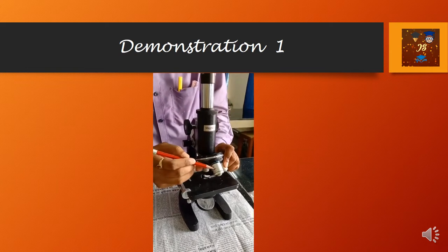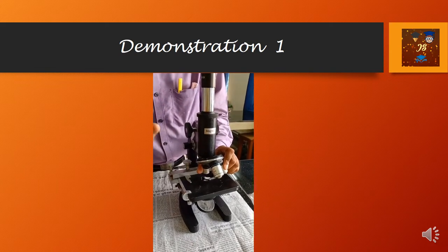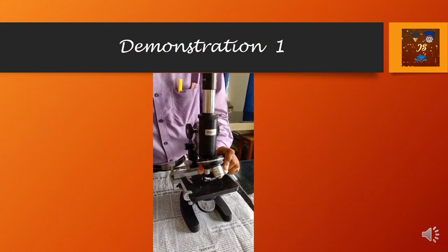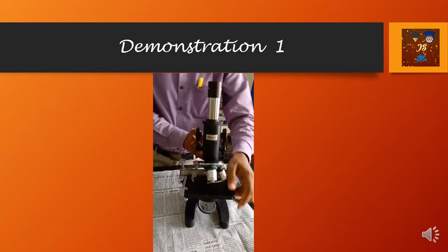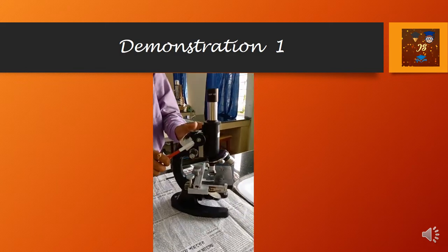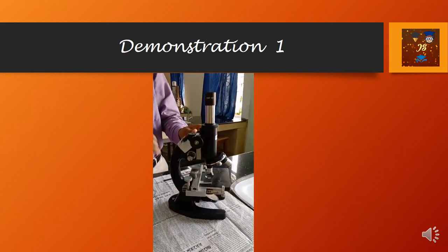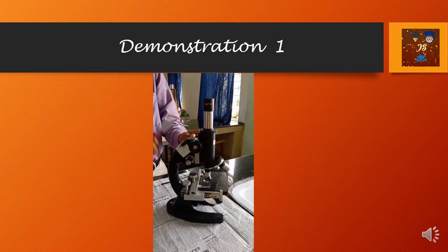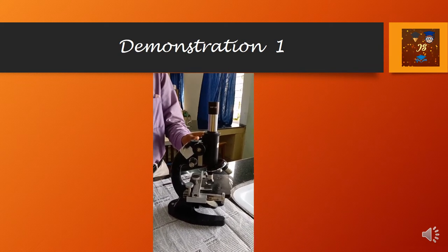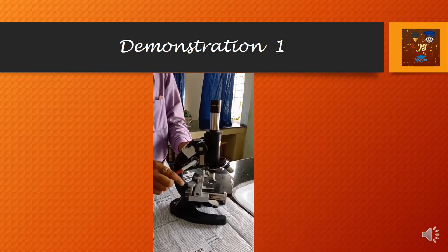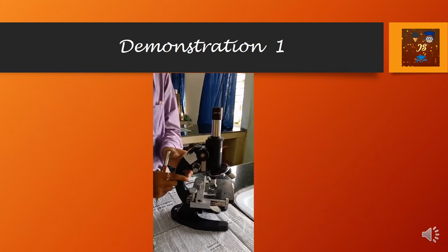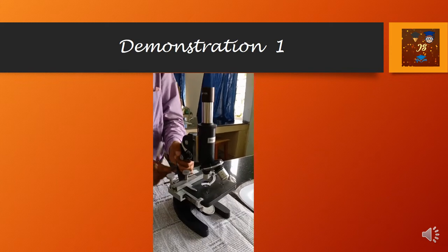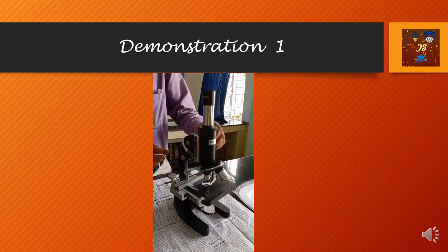This one is called the coarse adjustment screw, and this one is called the fine adjustment screw. Their function is to move the body tube up and down for focusing.